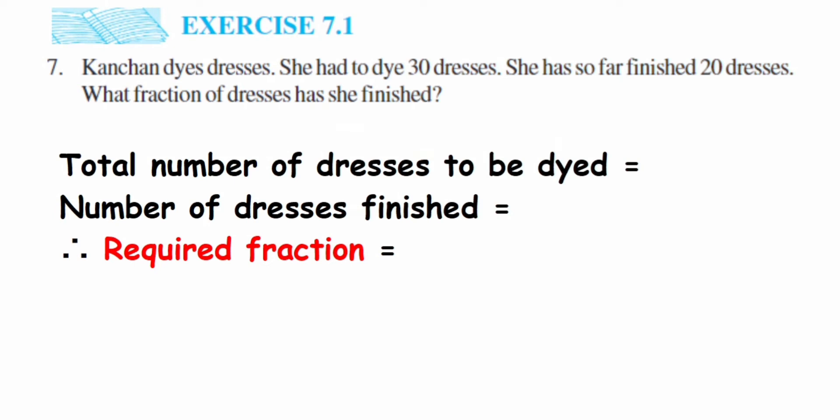They have given two things to us: that she has to dye 30 dresses, and out of that she has finished 20 dresses. So they are asking what fraction of dresses she has finished. Here, total number of dresses to be dyed will be 30.